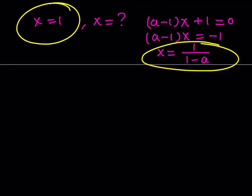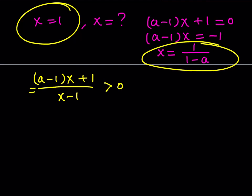Now let's see how we're going to proceed. This is the first part — finding the roots. My expression, going back to what we did first, is (a minus 1)(x plus 1) divided by (x minus 1), and I want this to be greater than 0, which means positive. Let's call this expression f(x), because I'm going to use that a lot when solving this inequality. So instead of writing the whole thing, I'm just going to write f(x) every time.